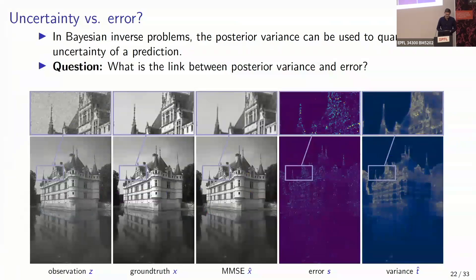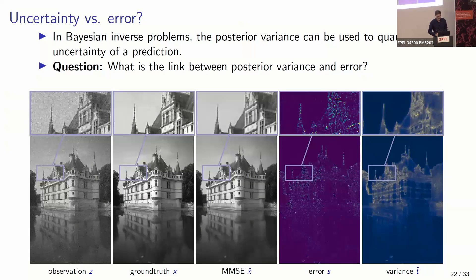Now let's discuss uncertainty estimation. With a sampling algorithm, you can compute the posterior mean (MMSE) and also pixel-wise posterior variances — how much each pixel changes across samples. This is called uncertainty estimation: measuring the variance of the posterior. More generally you have covariances, but pixel-wise variance is practically useful.